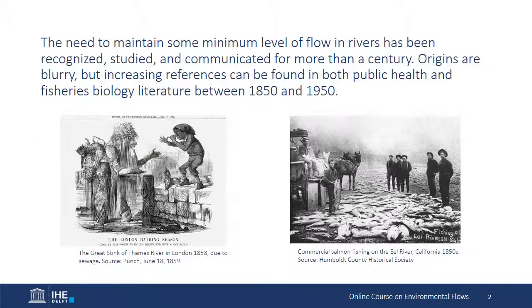The earliest references I've found to flow-related concerns in water resources management come from the public health and fisheries sectors. Interest in river flows emerged in the public health sector in the mid-1800s when physicians began to link illness with contaminated water. This stimulated research into the fate and dynamics of contaminants, especially organic wastes, in rivers. London and the River Thames were the site of some of the earliest activities of this type.